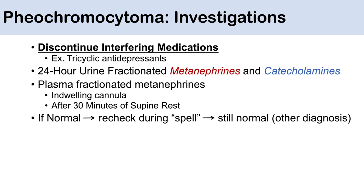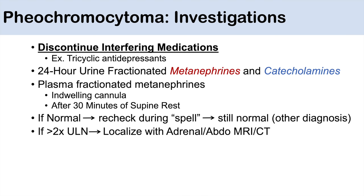If results show normal levels of metanephrines and catecholamines, recheck during a symptomatic spell. If levels remain normal, consider other diagnoses. However, if metanephrines and catecholamines are greater than or equal to about two times the upper limit of normal, the next step is to localize the tumor using adrenal or abdominal MRI or CT scan.